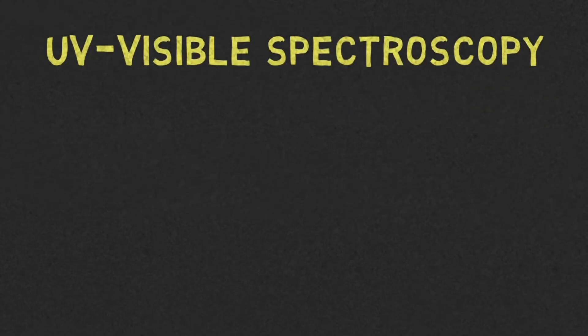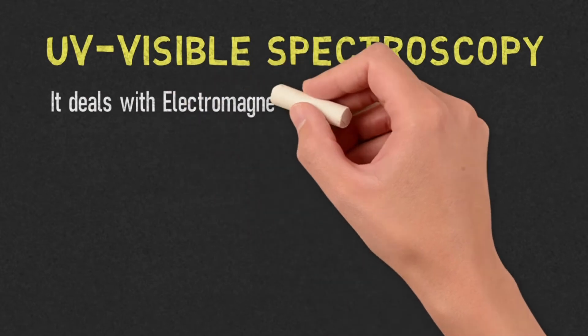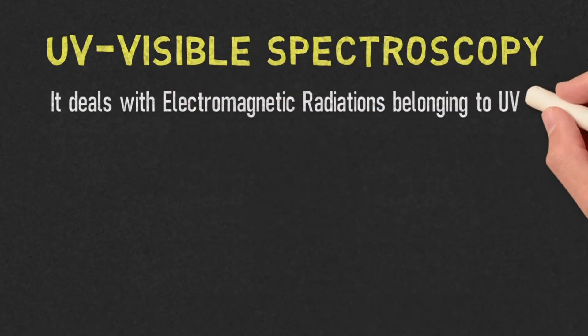UV-Visible Spectroscopy deals with electromagnetic radiations belonging to UV and visible regions.